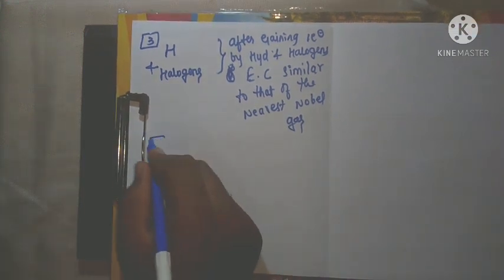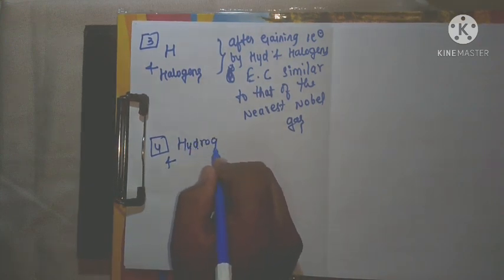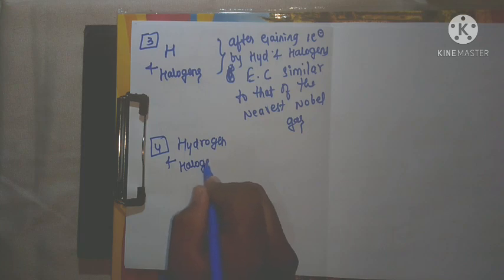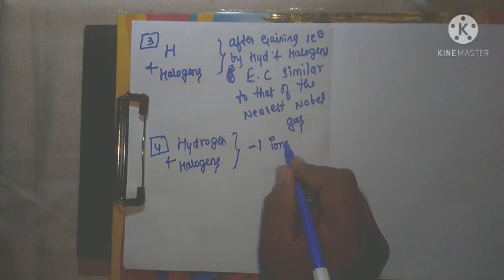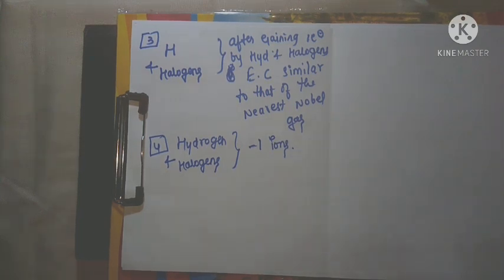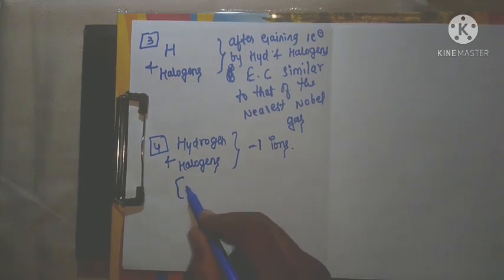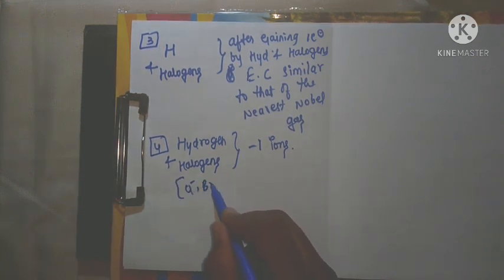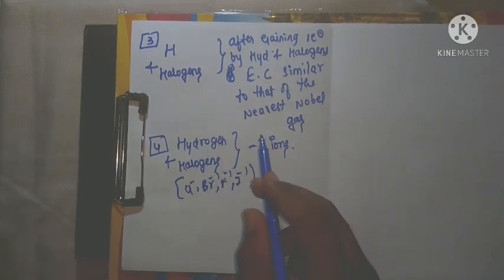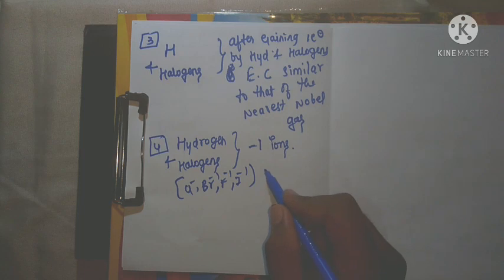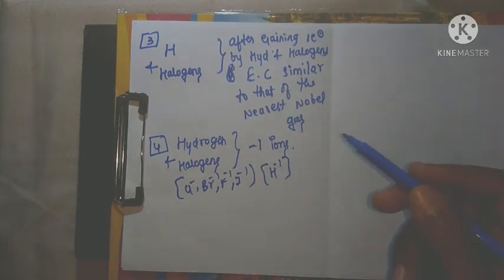The fourth similarity: after gaining one electron, both hydrogen and halogens become minus one ions. Halogens become halide ions — chloride, bromide, fluoride, iodide. Hydrogen becomes the hydride ion H⁻. These are the similarities between hydrogen and the halogens.